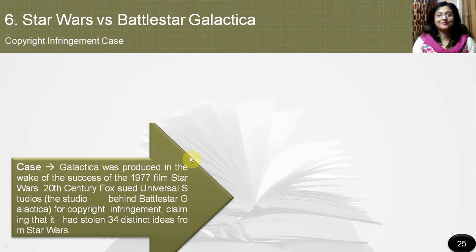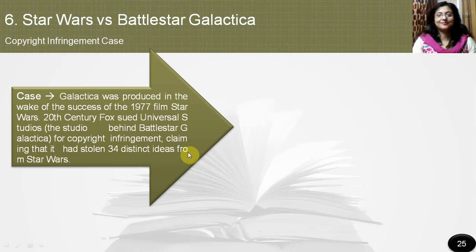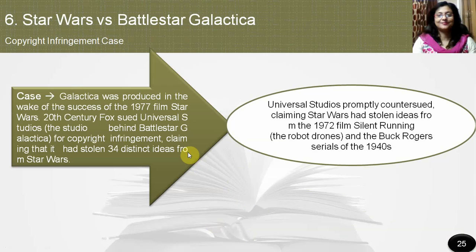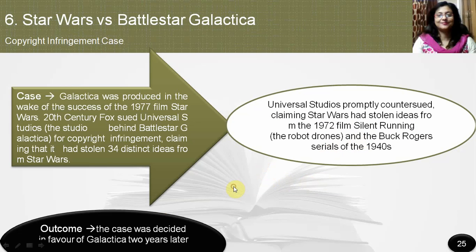The film Battlestar Galactica was produced in the wake of the success of the 1977 film Star Wars, but it had borrowed a little too much from it. 20th Century Fox sued Universal Studios, the studio behind Battlestar Galactica, for copyright infringement, claiming it had stolen 34 ideas from Star Wars. Universal Studios, however, promptly countersued 20th Century Fox, claiming Star Wars had stolen ideas from the 1972 film Silent Running and the Buck Rogers serials of the 1940s. In the end, the case was decided in favor of Galactica.